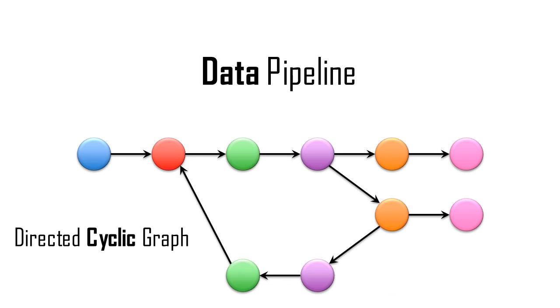In contrast, a cyclic graph contains at least one cycle.